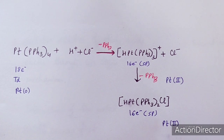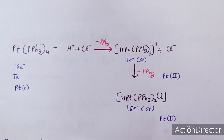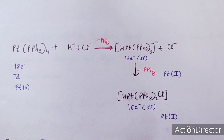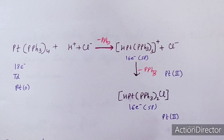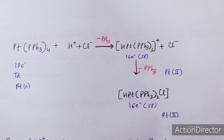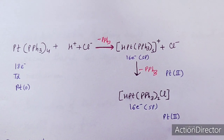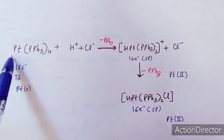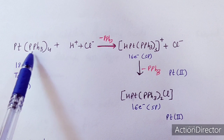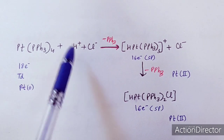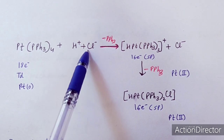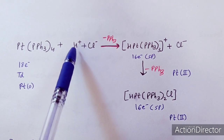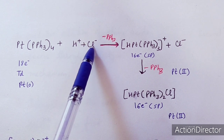First, we will see the example, then I will give insight on the points to be noted for ionic mechanism. This is the ionic mechanism — I have shown a platinum complex as an example, and this is hydrogen chloride, a hydrogen halide, which is a polar reagent.